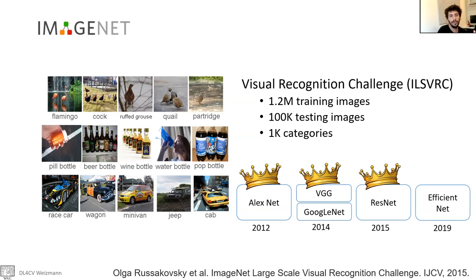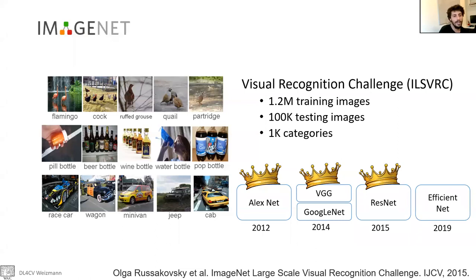ResNet from 2015 took deep learning to the extreme, using a lot of layers. Since this challenge finished in 2017, we're also going to see an additional network called EfficientNet, which tries to improve both the accuracy and efficiency of those networks. In addition, at the end, we're going to talk a bit about transfer learning, which is not an architecture but is a topic that is highly related to architecture. So let's start.